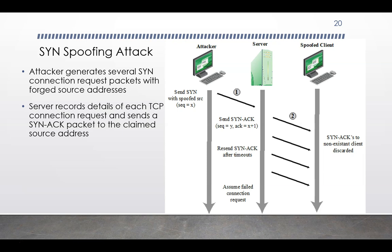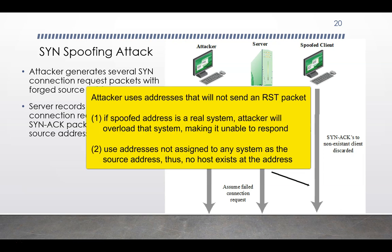Table entries will time out and be removed, which in normal network usage corrects temporary overflow problems. But if the attacker keeps a sufficient volume of forged requests flowing, the table will be constantly full and the server will be effectively cut off from the internet, unable to respond to most legitimate connection requests. To maximize table usage, the attacker uses addresses that will not respond to the SYN ACK with a reset — either by overloading the host at the spoofed address or by using a wide range of random addresses, relying on the many unused addresses on the internet.